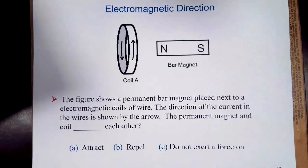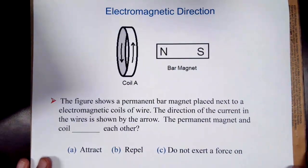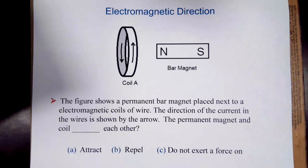The other question that gives people a lot of problems, this is hugely one of the two or three worst problems on the exam every year, is what happens when we look at an electromagnet and a regular magnet. In this case, we have a permanent bar magnet placed next to an electromagnetic coil, and we're told the direction of the current in the coil.